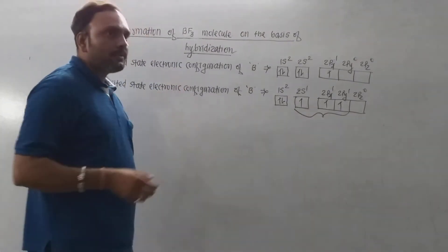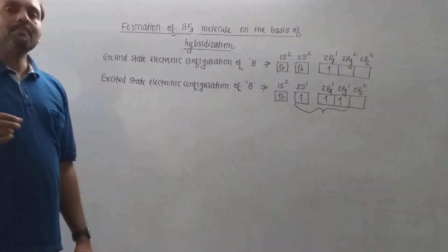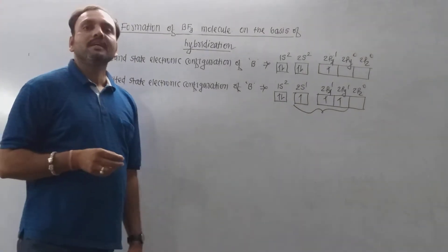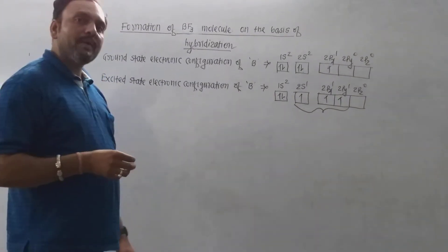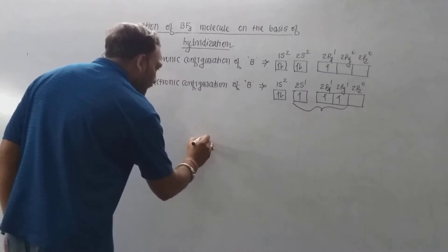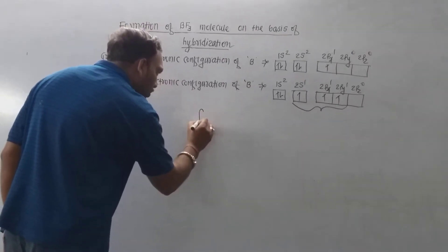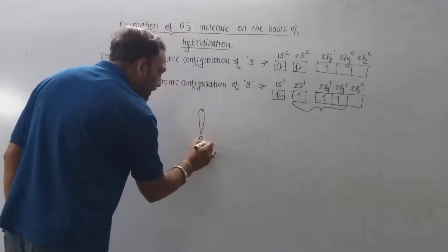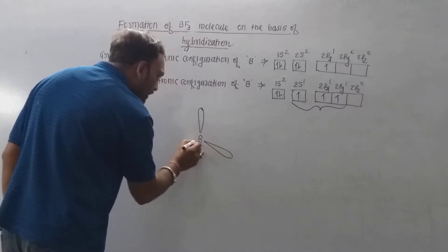The 3 sp² hybrid orbitals of boron, each containing an unpaired electron, are directed trigonally around the central atom boron.